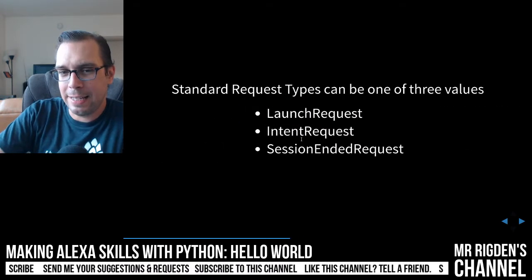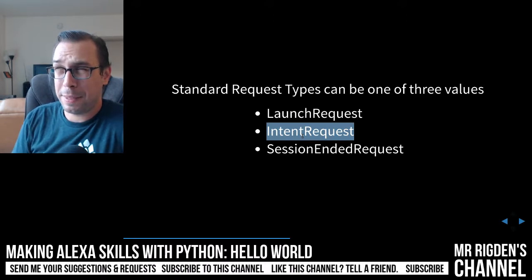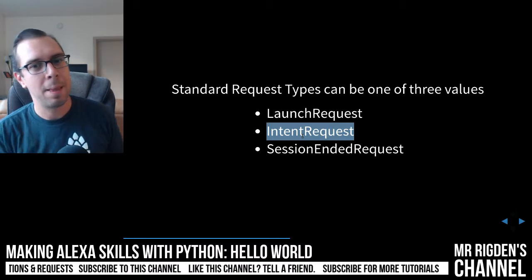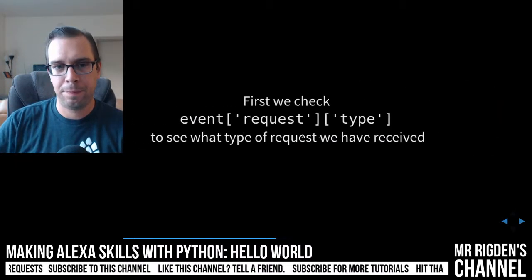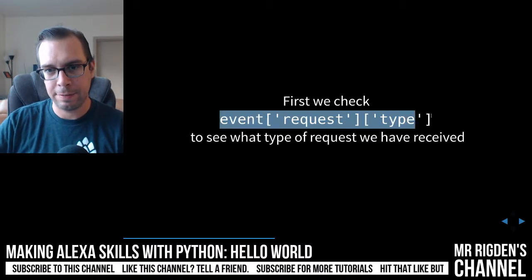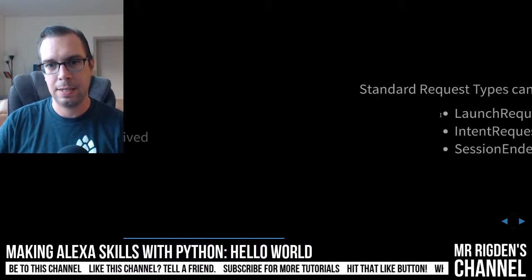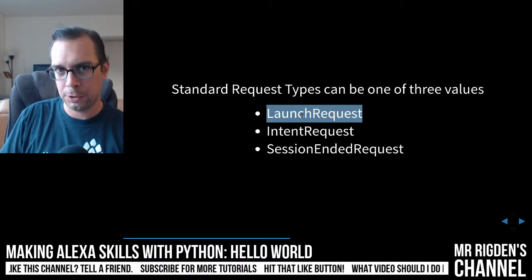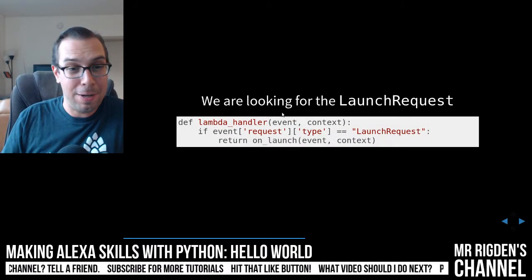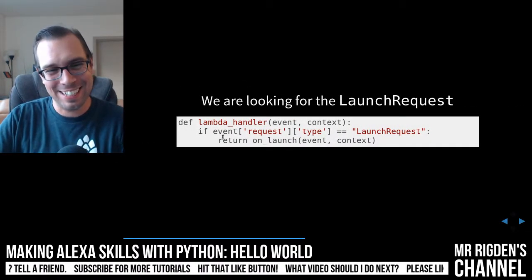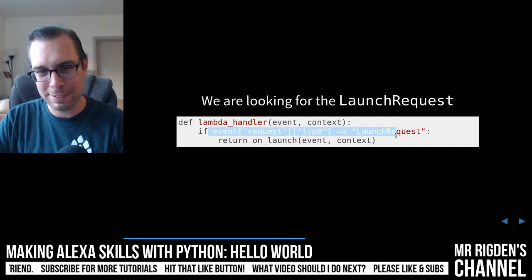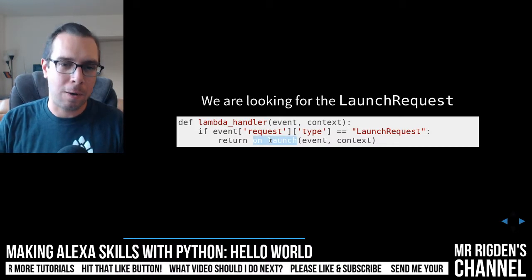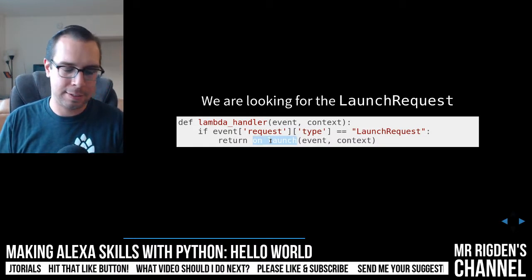A launch request is sent when a user invokes the skill with the invocation name and no intent. Our example here is 'Alexa, open Daily Numerology.' If we had an intent — like from the last video where we made an intent that said 'what is your favorite number?' — then the value of that type key would be an intent request. But right now we are just looking for a launch request.